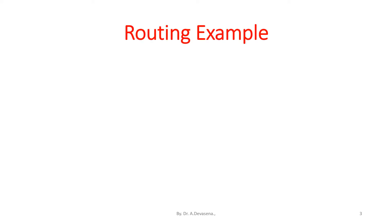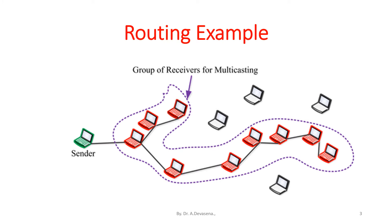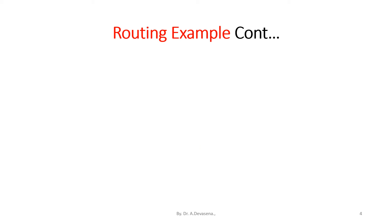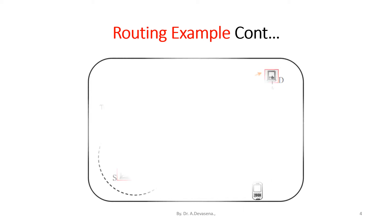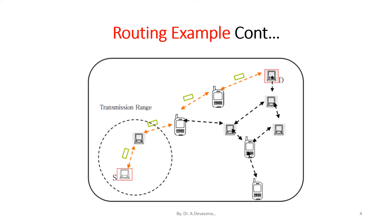Now we see a routing example with the help of a small diagram. This diagram represents the information being passed by the sender to a group of receivers. Here is another example of routing of information from sender to destination. The sender sends the information to the destination; the information may reach the destination in a variety of ways, as indicated in the diagram.